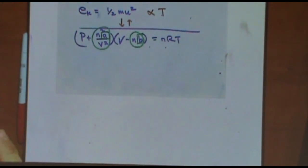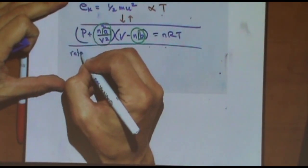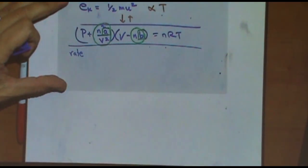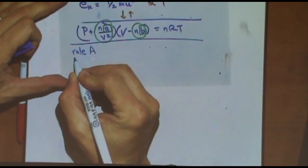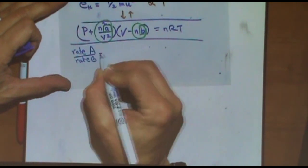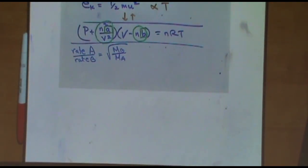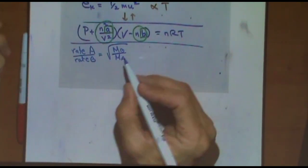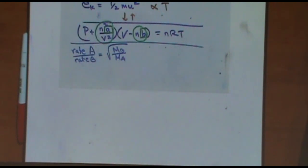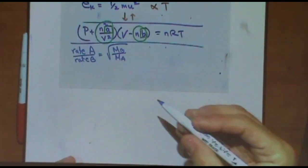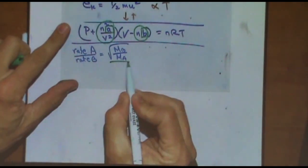Now Graham's Law. Traditionally, Graham's Law is written like this: rate of gas A over rate of gas B equals the square root of the molar mass of B divided by the molar mass of A. You know you're going to use Graham's Law if you have two gases, A and B, and the question is not asking about partial pressures - that would be Dalton's Law. If it's not talking about partial pressures, it's probably Graham's Law.